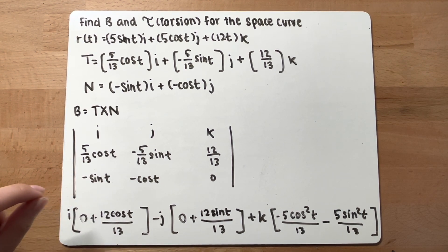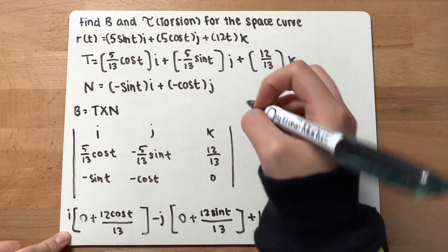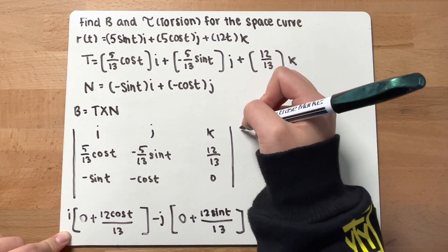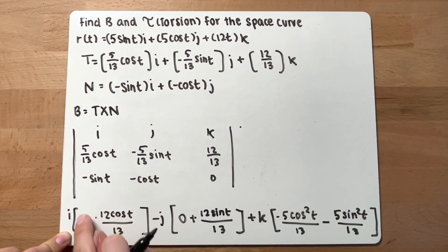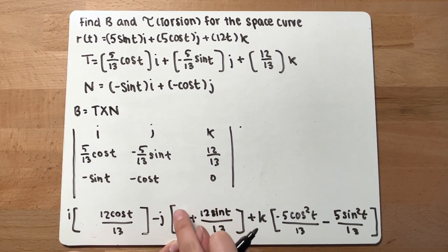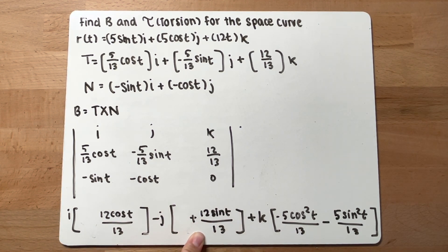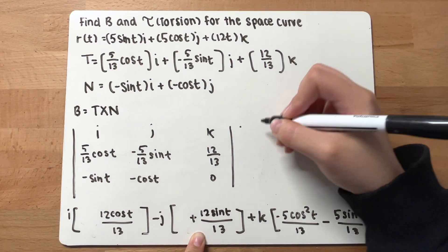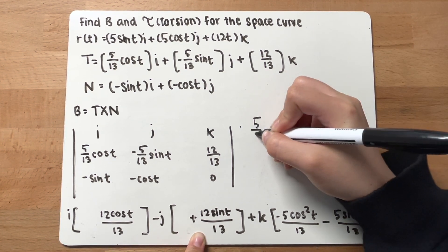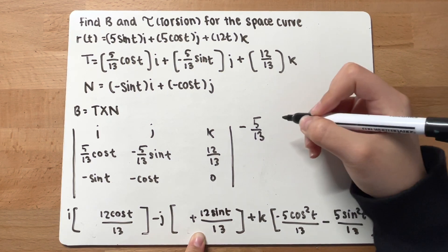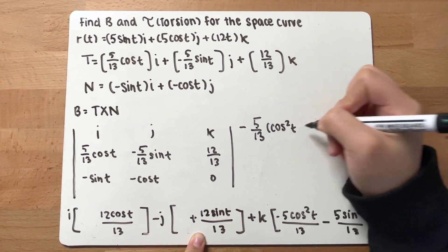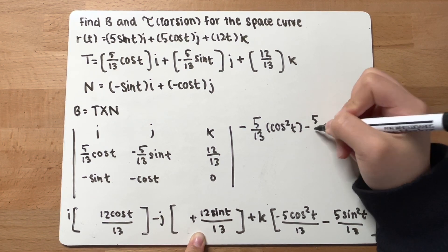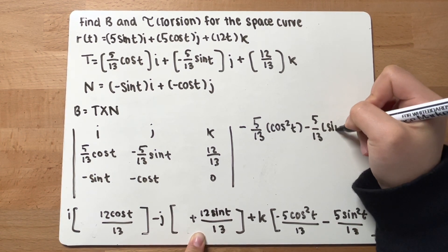Now simplify: i equals 12 cosine t over 13, j equals 12 sine t over 13, and for k, to simplify you can write it as negative 5 over 13 cosine squared t minus 5 over 13 sine squared t.